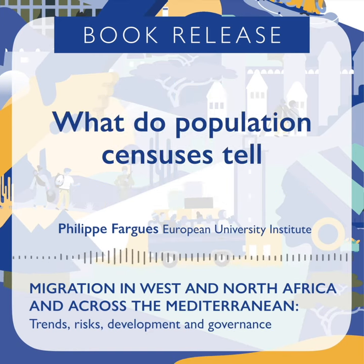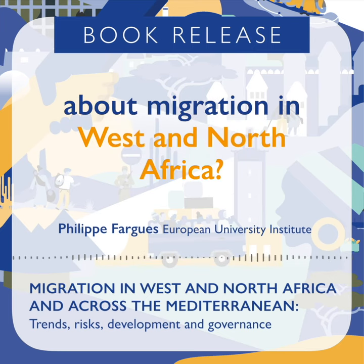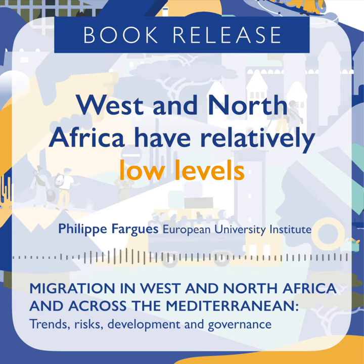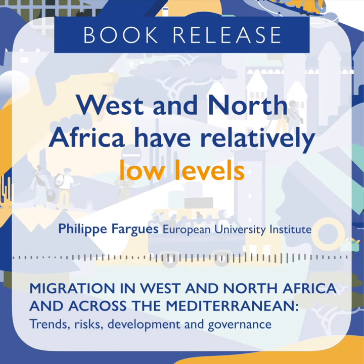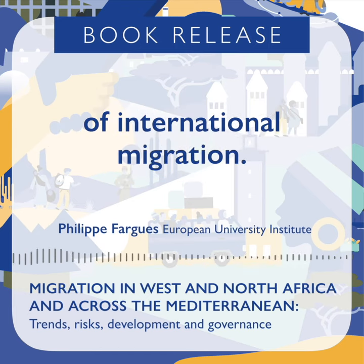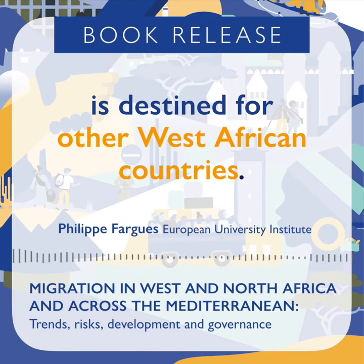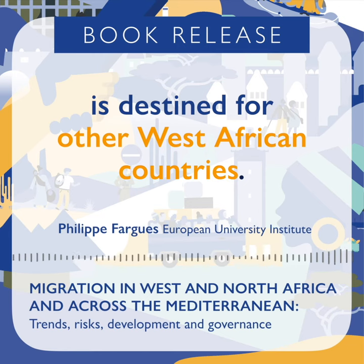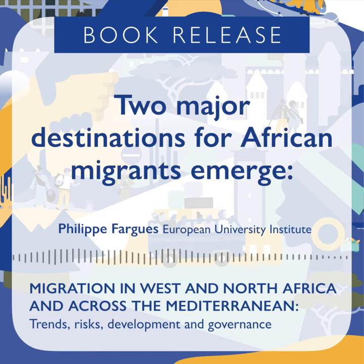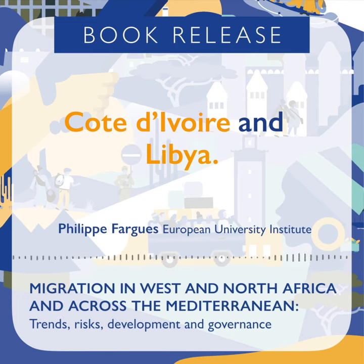What do population censuses tell us about migration in West and North Africa? West and North Africa has a relatively low level of international migration. Most migration from West African countries is destined for other West African countries. Two major destinations for African migrants emerge: Côte d'Ivoire and Libya.